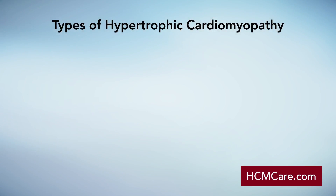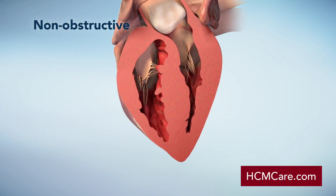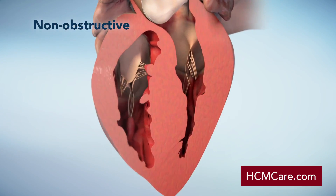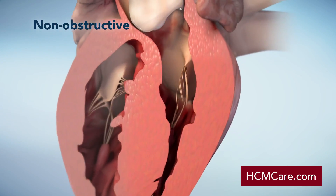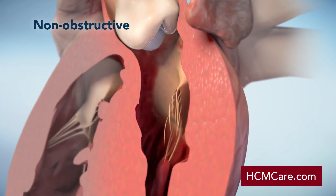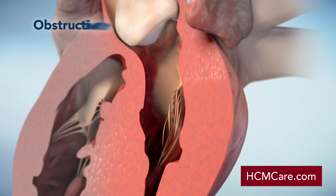Hypertrophic cardiomyopathy can be non-obstructive or obstructive. If you have non-obstructive hypertrophic cardiomyopathy, your heart has thickened walls, but the walls and mitral valve do not block blood flow out of your left ventricle.